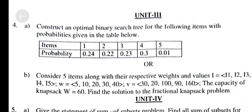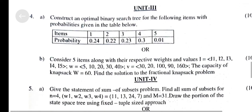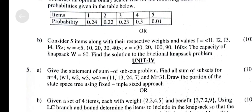Construct an Optimal Binary Search Tree for the following items with probability given in the table below. B. Construct 5 items along with their respective values: i1, i2, i3, i4, i5 where W = {5, 10, 20, 30, 40} and V = {30, 20, 100, 90, 160}. Capacity of Knapsack W = 40.